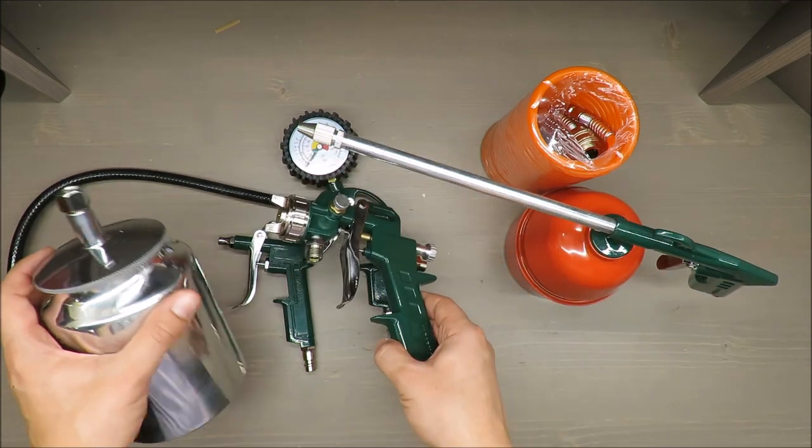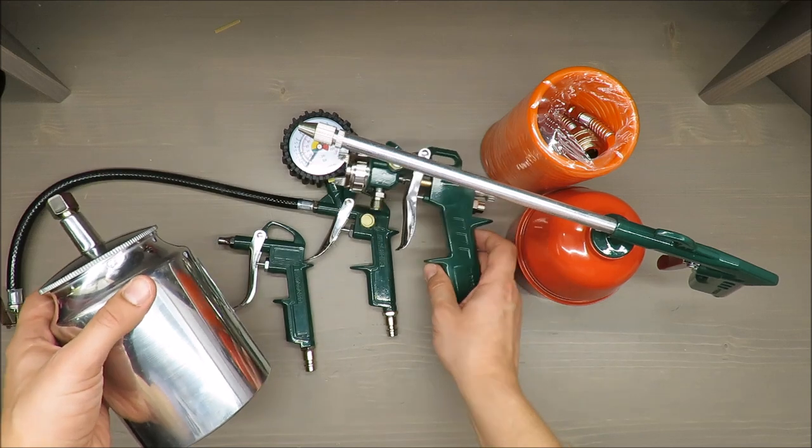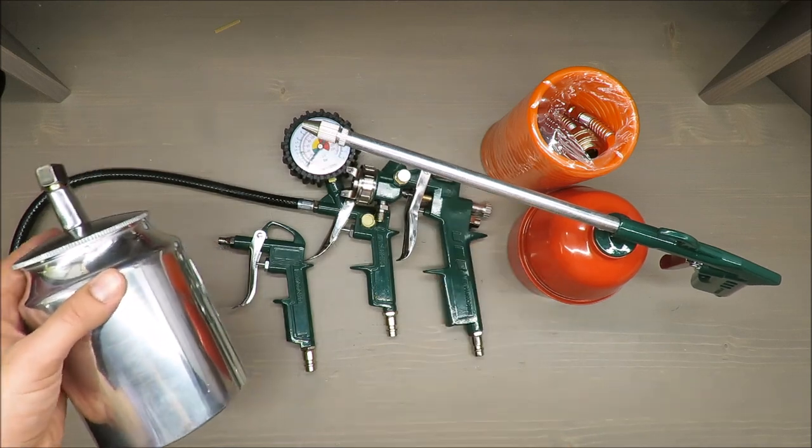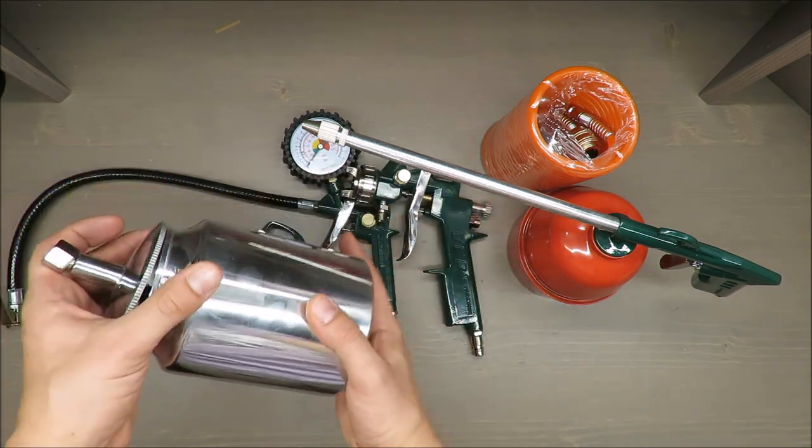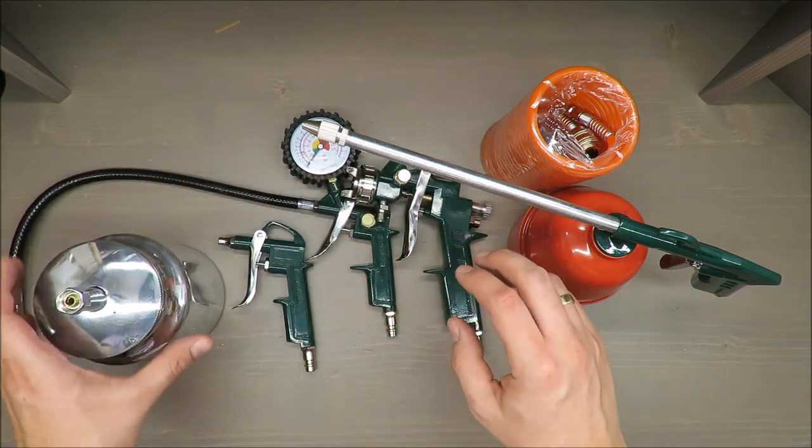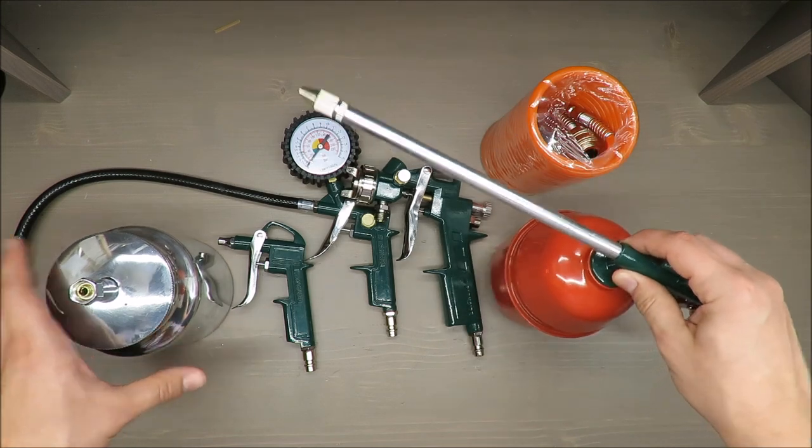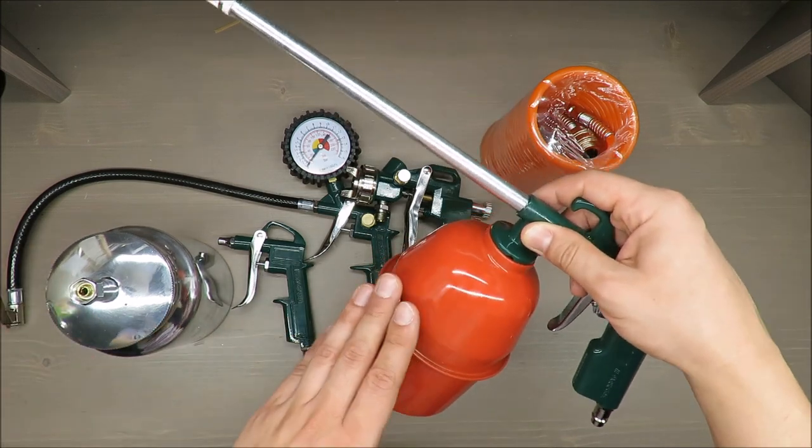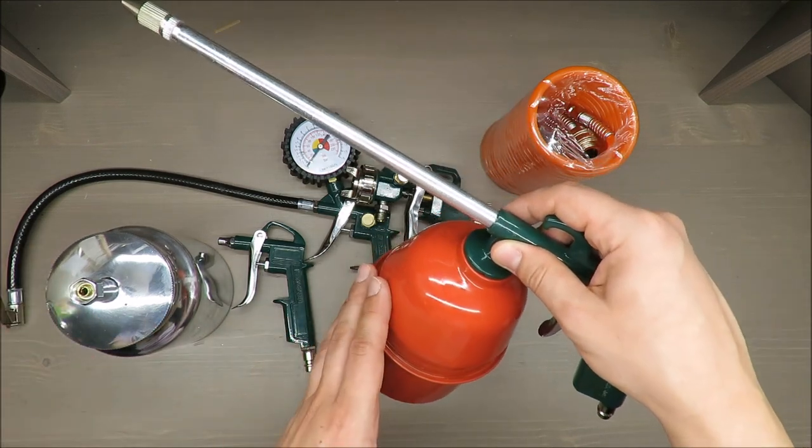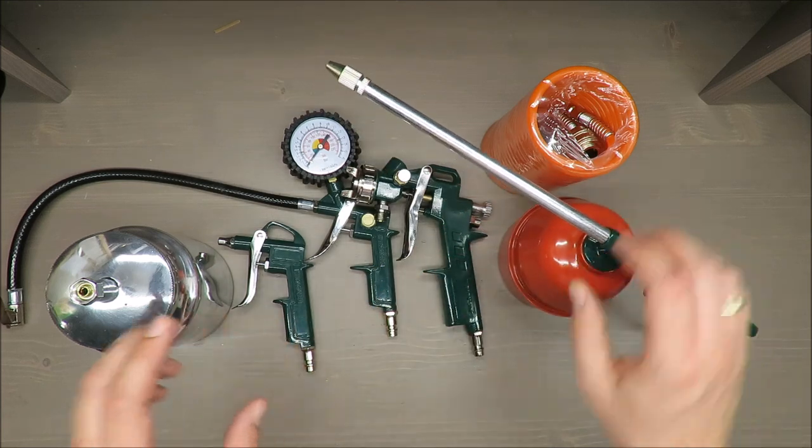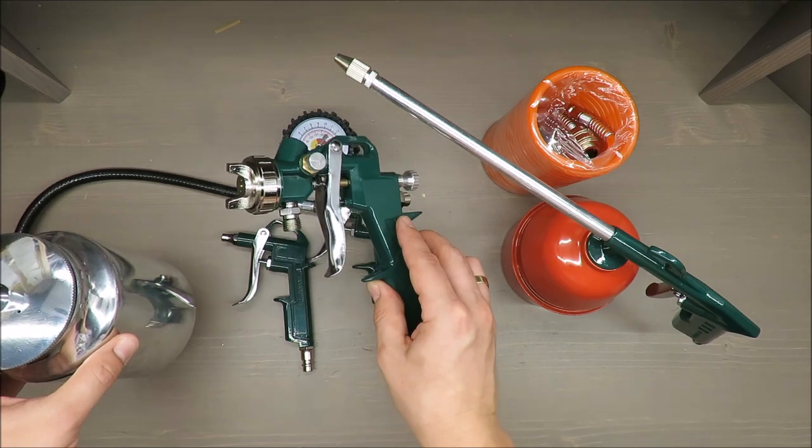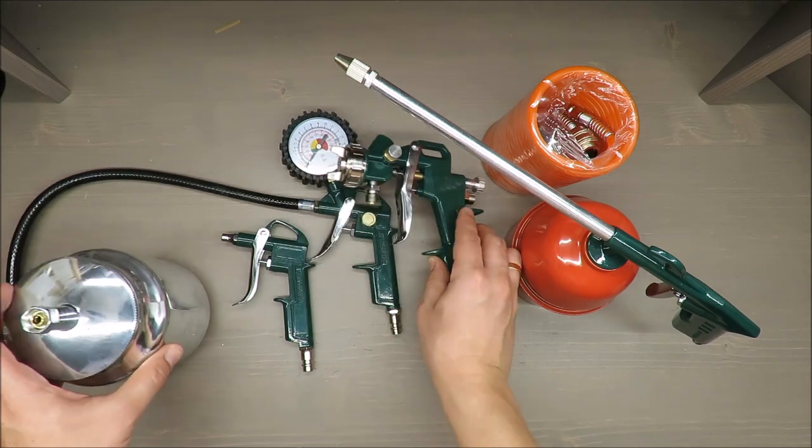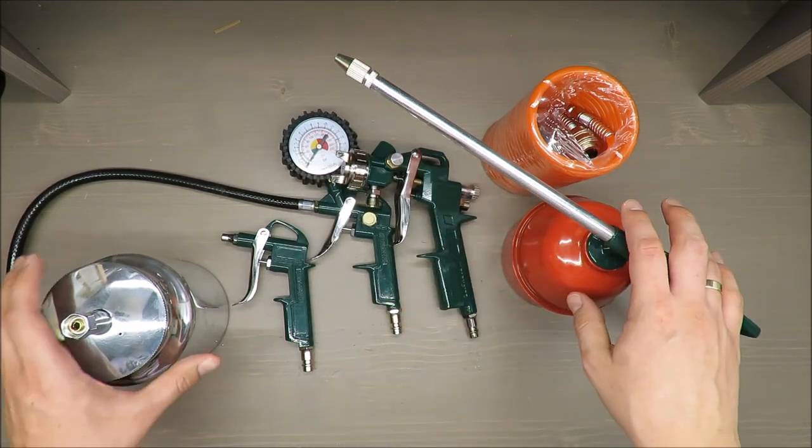The painting spray gun comes with a 100 milliliter container and has a maximum working pressure of 5 bars. The air spray gun has a 900 milliliter container with maximum working pressure of 8 bars.